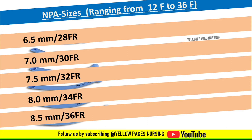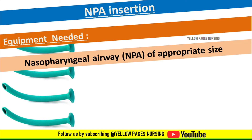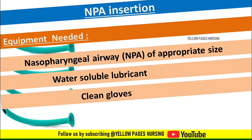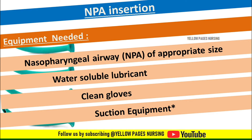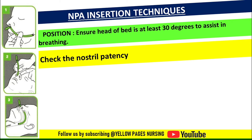Equipment needed for nasopharyngeal airway insertion includes: nasopharyngeal airway of appropriate size, water-soluble lubricant, clean gloves, and suction equipment. Ensure the head of the bed is at least 30 degrees to assist in breathing. Check nostril patency by feeling for air movement through one nostril while occluding the other with external finger pressure, and assess for any blocks, blood, secretions, or foreign body.